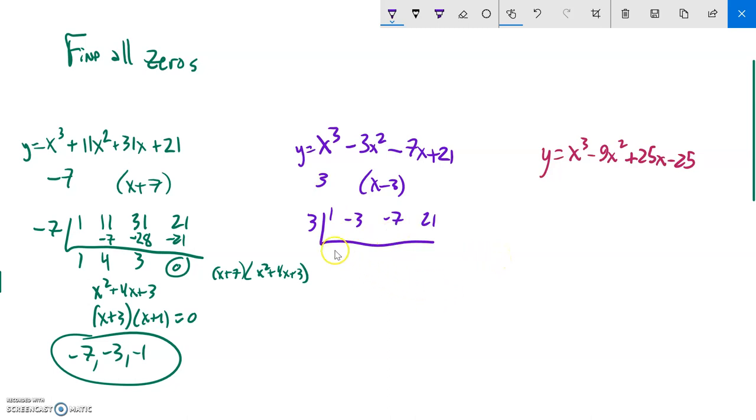Now I do the synthetic division. Remember this process: bring it down, multiply, add, multiply, add, multiply, add. Oops, I was getting ahead of myself with the zero there. Cool, I have a remainder of zero. That means that this goes into that evenly.